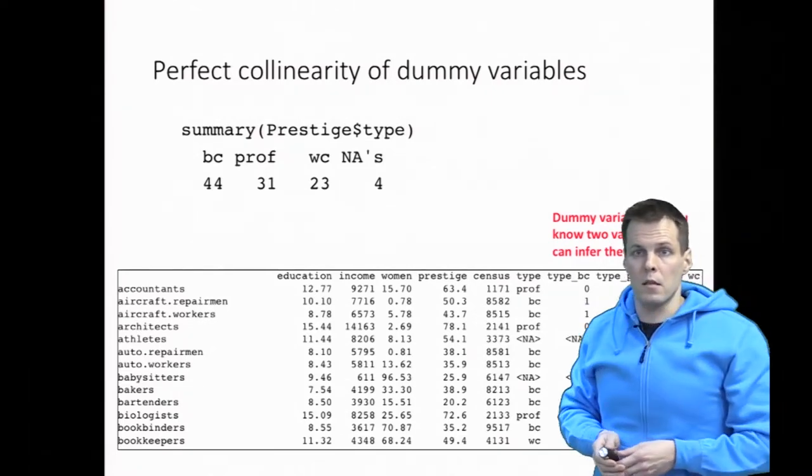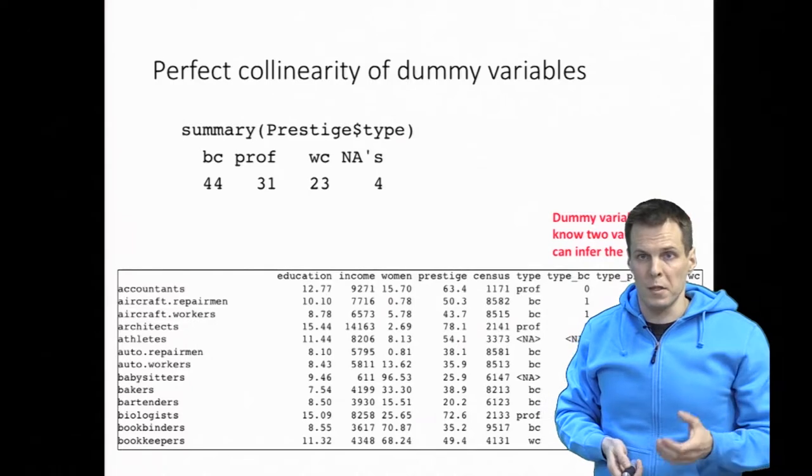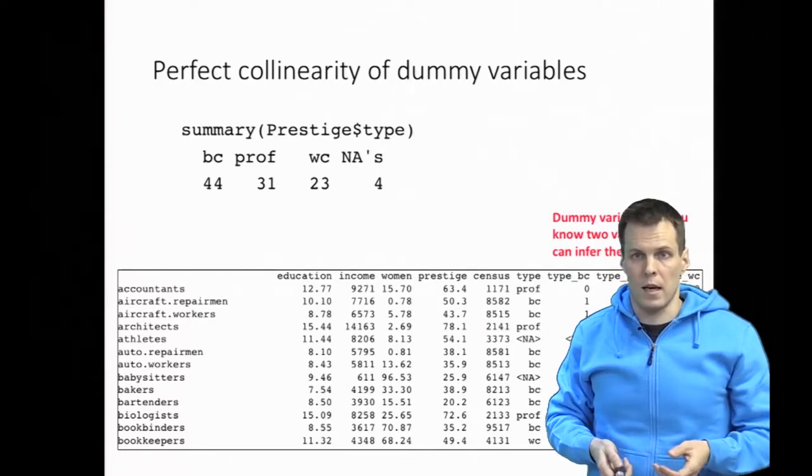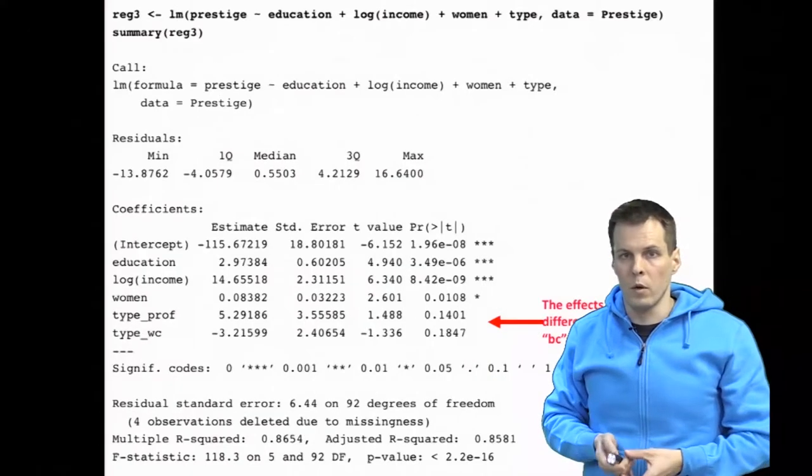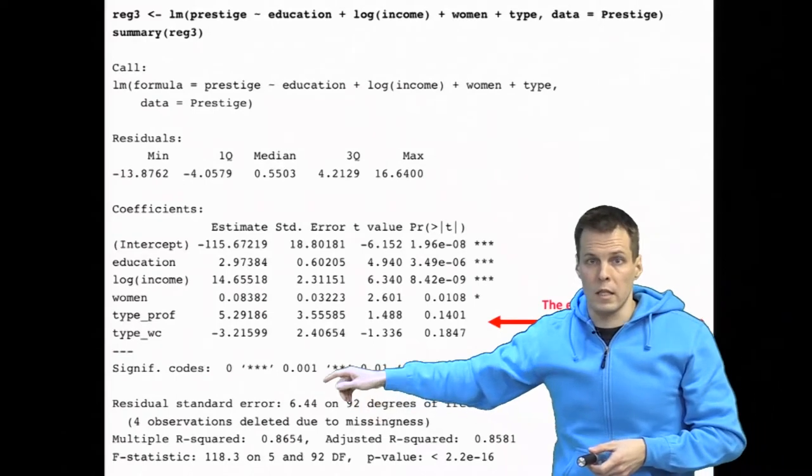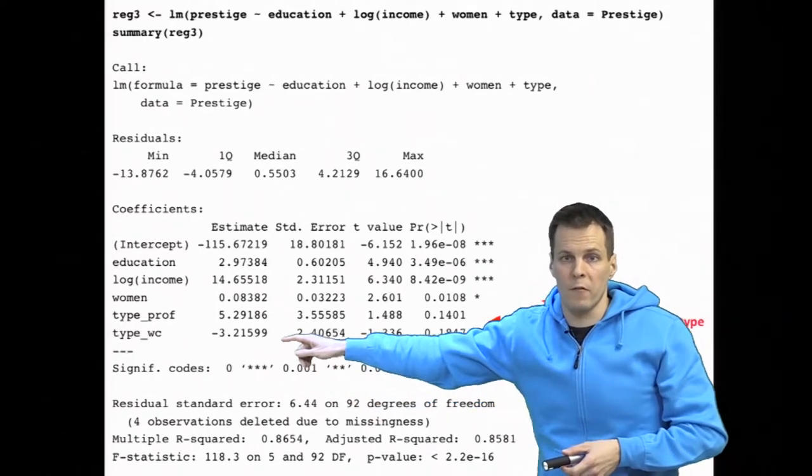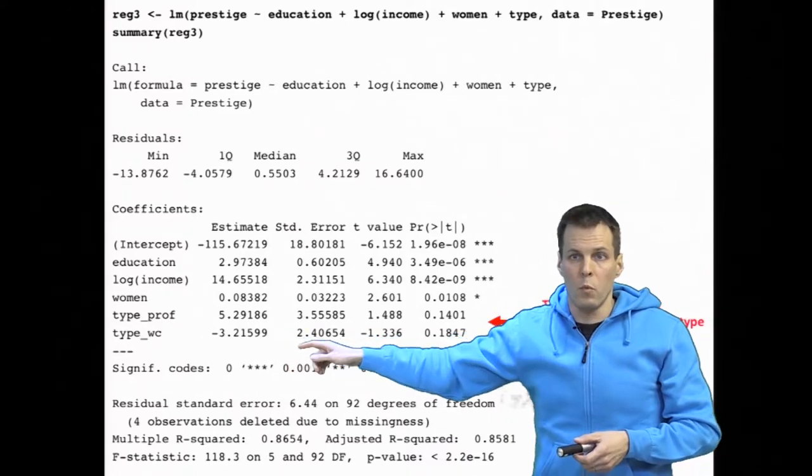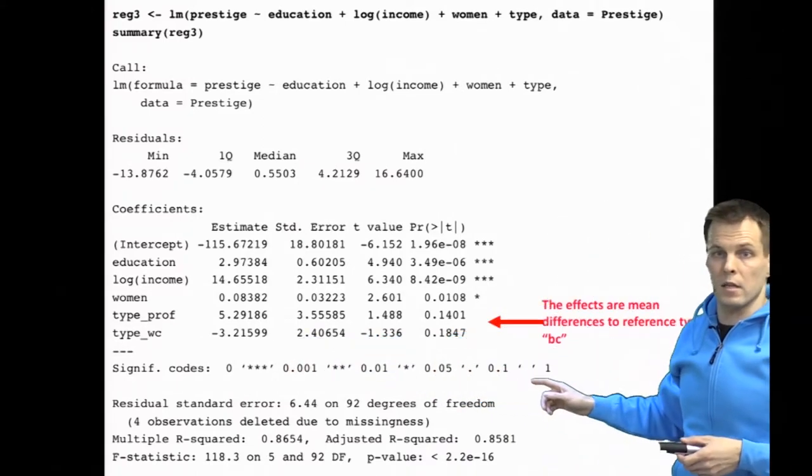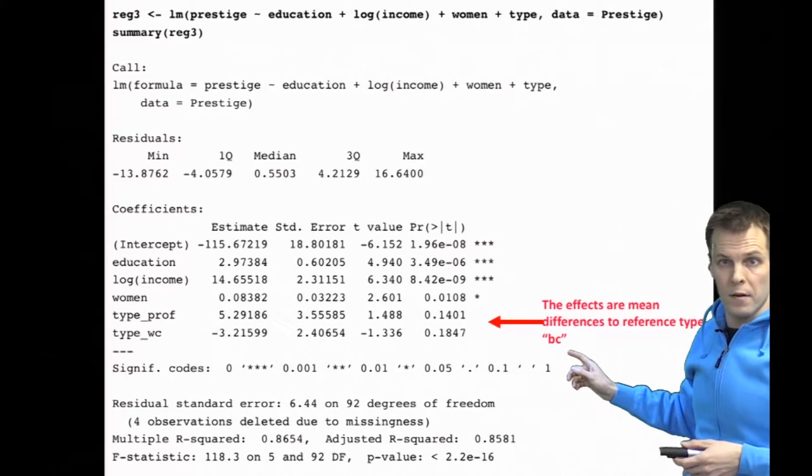In practice, when we do a regression analysis where we specify type as a categorical variable, we will get two estimates. We will get the estimate of type professional and type white collar, and one of these categories is left out as a reference category.